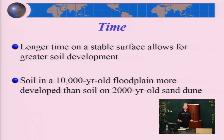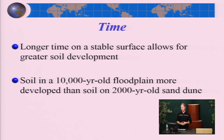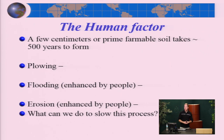Time is another critical factor — soil takes a long time to develop. A few inches of prime farmable soil takes hundreds of years to form, not overnight or even in a few months. We're talking hundreds if not thousands of years. Some floodplains and areas in parts of Europe and Asia have soils that can be dated back tens of thousands of years. A few centimeters of prime farmable soil takes roughly half a millennium — about 500 years — to form.